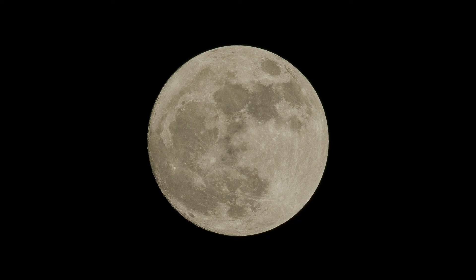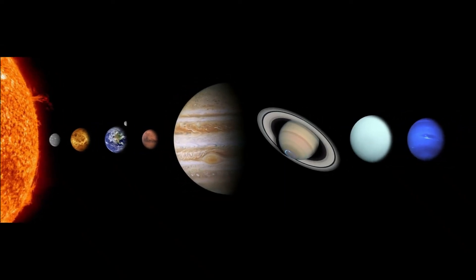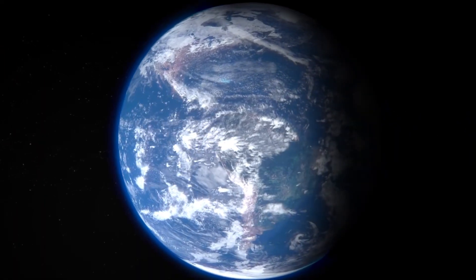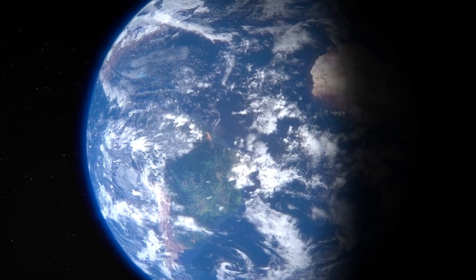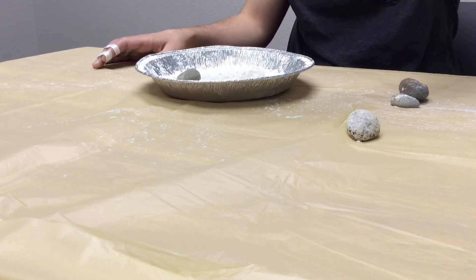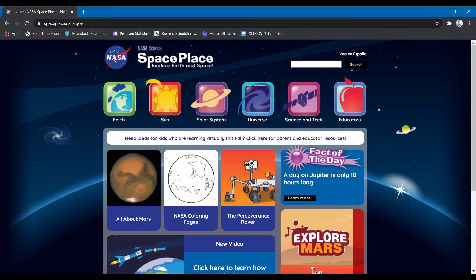If you've ever heard of the man on the Moon, his face was made by meteorites crashing into the surface. So our solar system is made up of eight planets, all spinning around the Sun because of gravity. One day is the Earth turning all the way around on its axis, and a year is the Earth going all the way around the Sun. The Earth and the Moon have gravity, which pulls objects towards each other. The craters of the Moon were created by meteorites crashing into the surface. If you have more questions about space, check out the NASA Space Place website in the description.